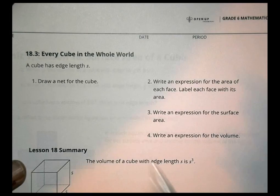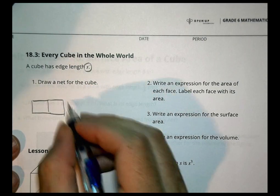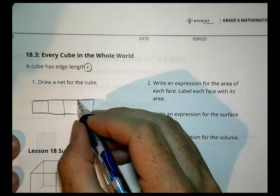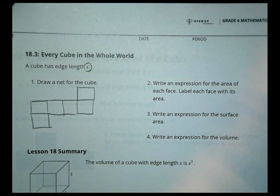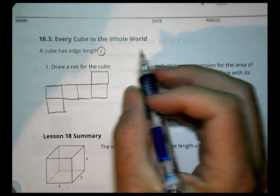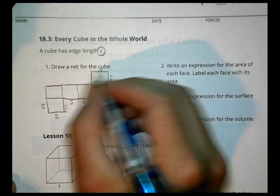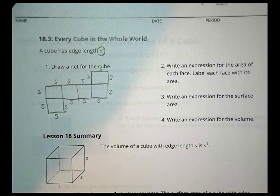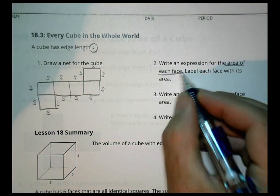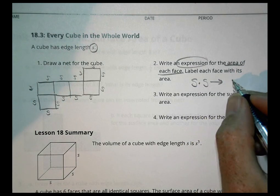Activity 3: every cube in the world. A cube has an edge length of S. Drawing the net again — the same layout with 4 sides and top and bottom — and labeling every edge length as S. Write an expression for the area of each face: S times S, which is S squared.